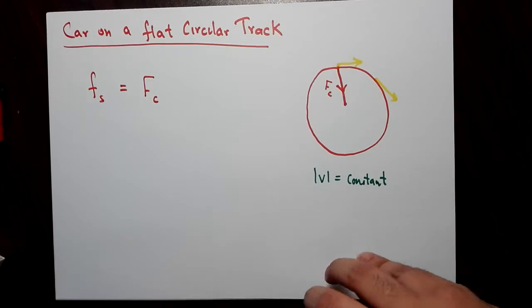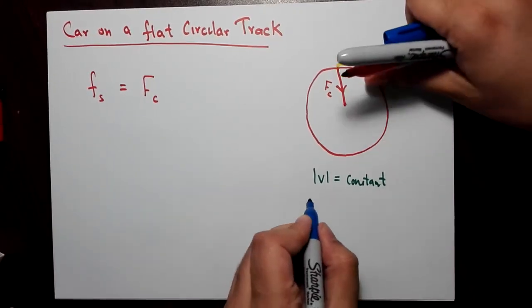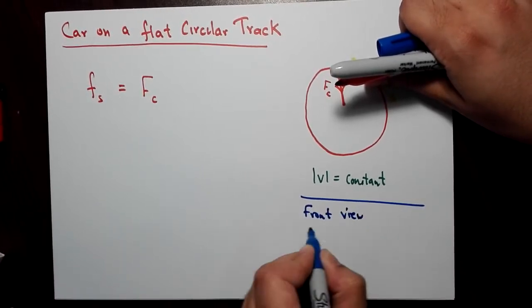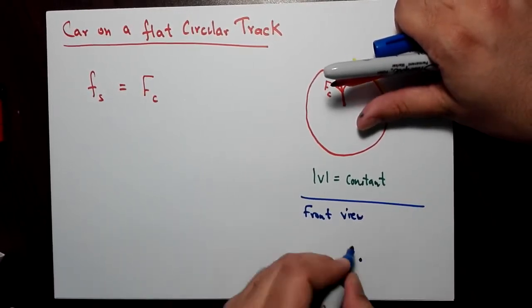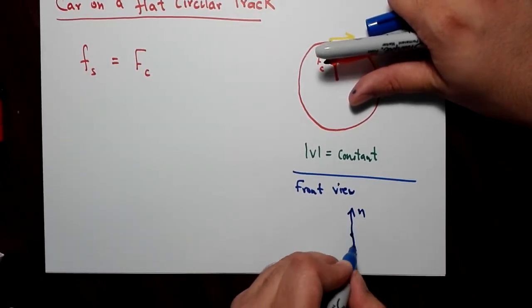Now let's look at the free body diagram. Let's look at the front view of the car. So here's the front view. Normal force is in the upward direction, and weight is down,